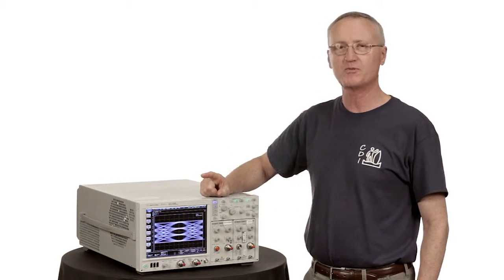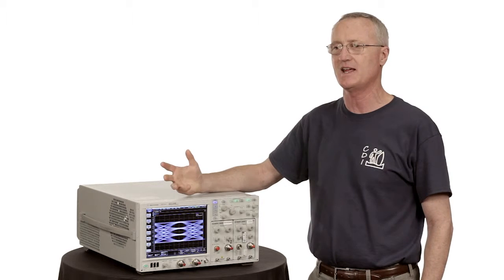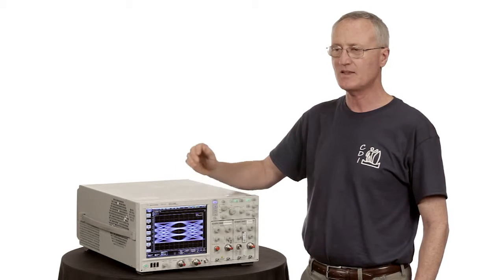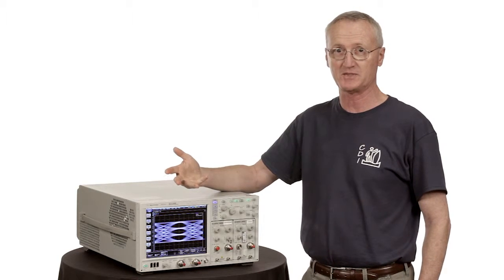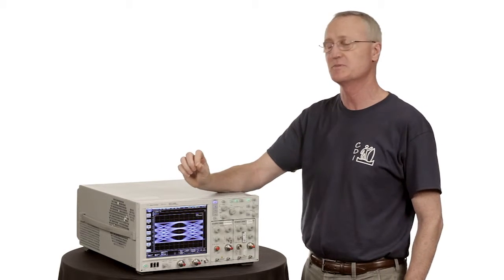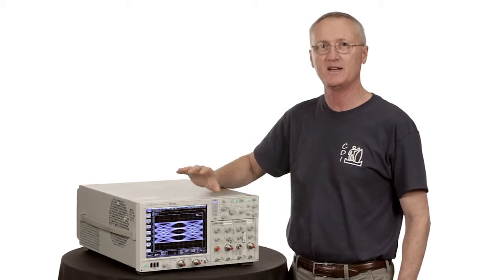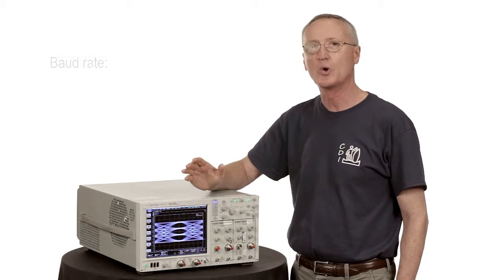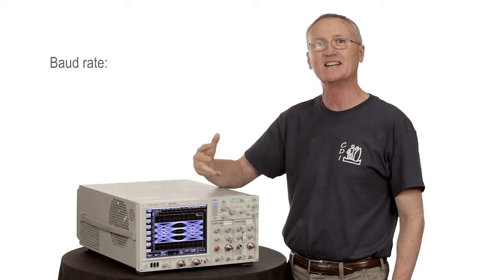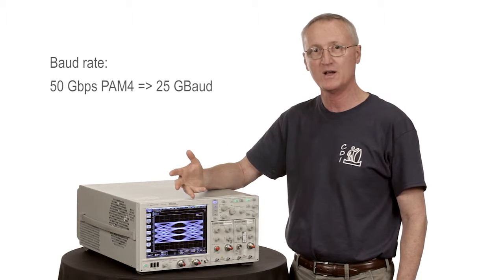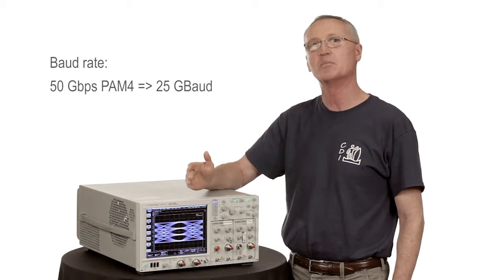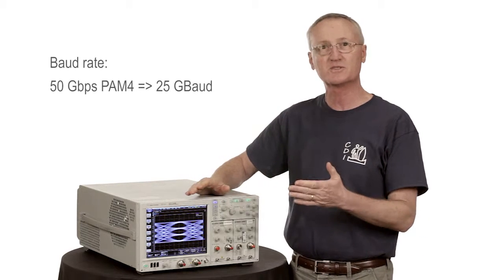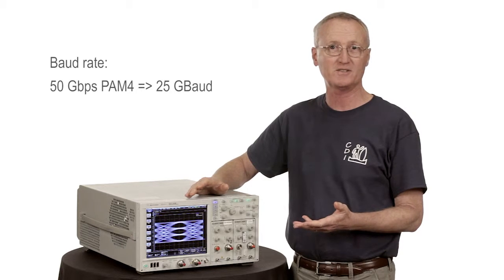Well, when we think about a PAM-4 signal, for example, take a PAM-4 50 gigabit per second signal. The data rate is 50 gigabit per second. But the key thing in terms of bandwidth for the DCA is to think in terms of how fast that signal is switching or what the baud rate is. So a 50 gigabit per second PAM-4 would be a 25 gigabaud signal. So 25 gigabaud has a fundamental frequency of 12.5 gigahertz.